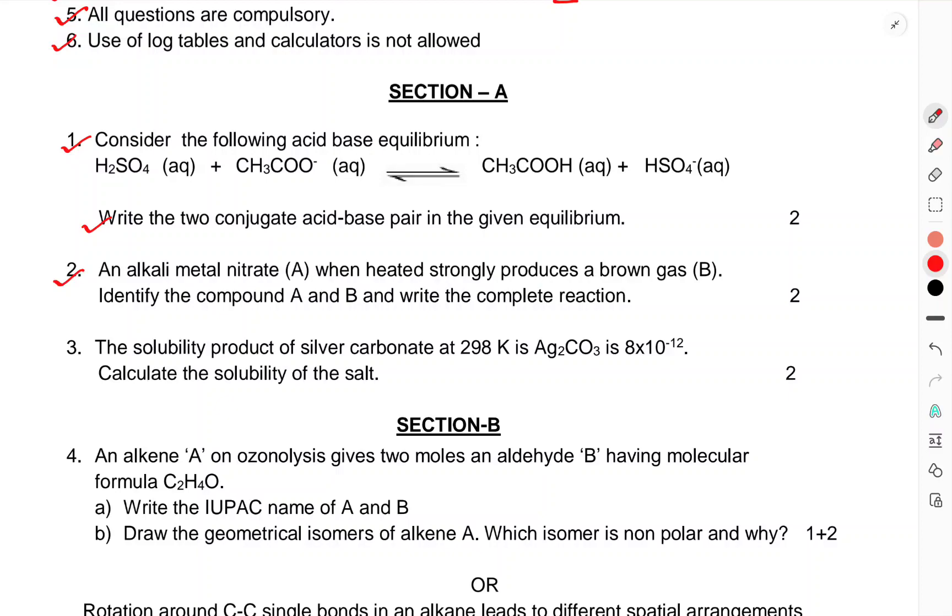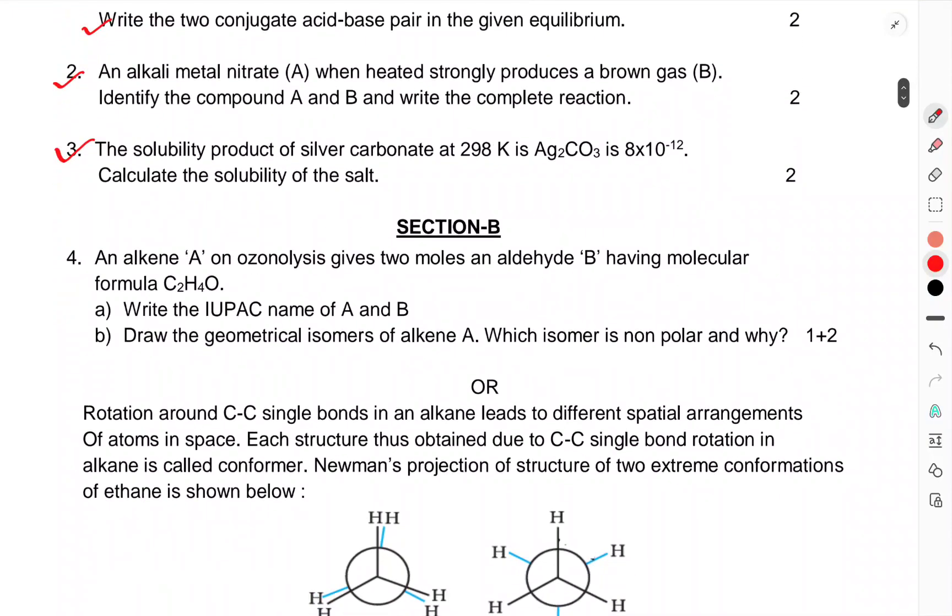An alkali metal nitrate when heated strongly produces brown gas B. Identify the compound A and B. Write the complete reaction. The solubility product of silver carbonate at 298K, Ag2CO3, is 8×10^-12. Calculate the solubility of the salt.